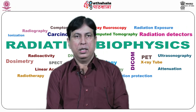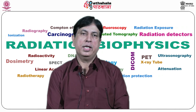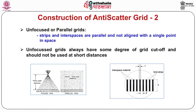Typical grid focal lengths are 100 cm for general radiography and 183 cm for chest radiography. In an unfocused or parallel grid, the interspaces and strips are parallel and are not aligned with a single point in space. Because the X-ray beam direction is aligned with the grid, much of the primary radiation passes through the interspaces without encountering the lead strips. The scattered radiation leaves the patient's body in a direction different from the primary beam, and hence a large portion of it is absorbed by the grid. Unfocused grids always have some degree of grid cutoff and should not be used at short distances.